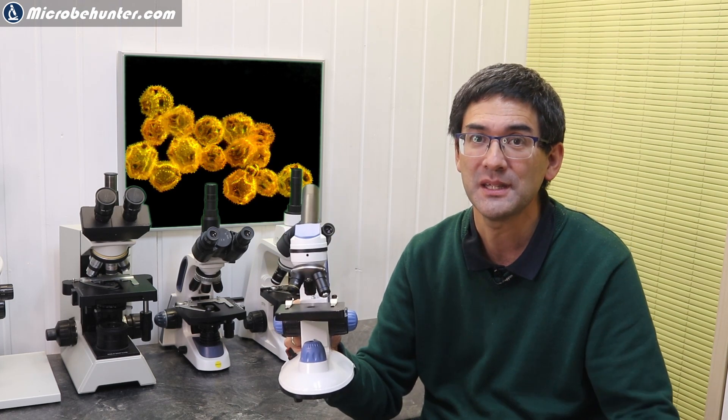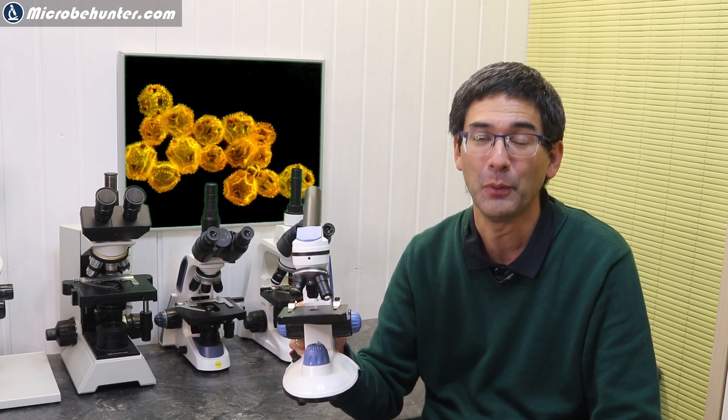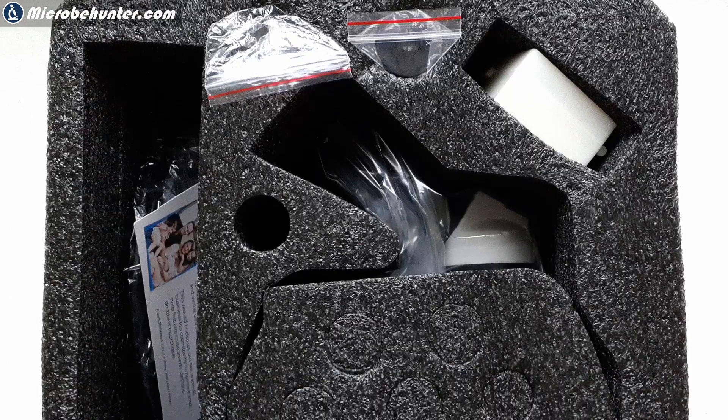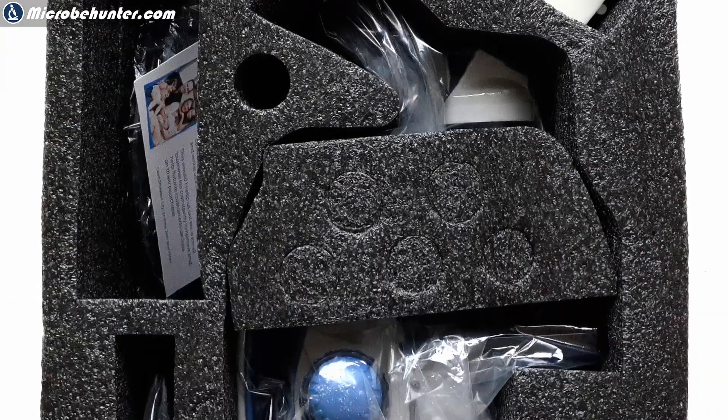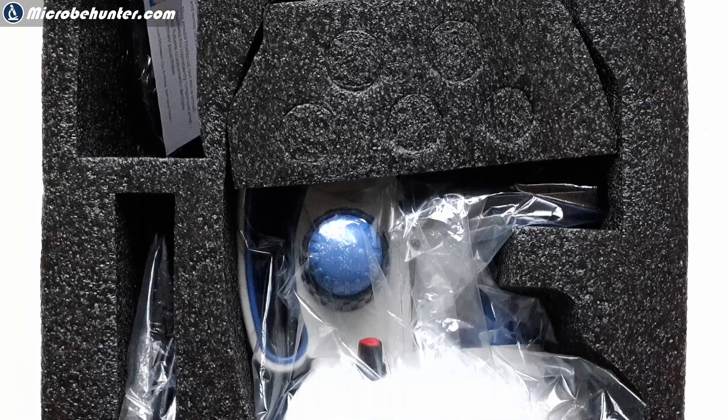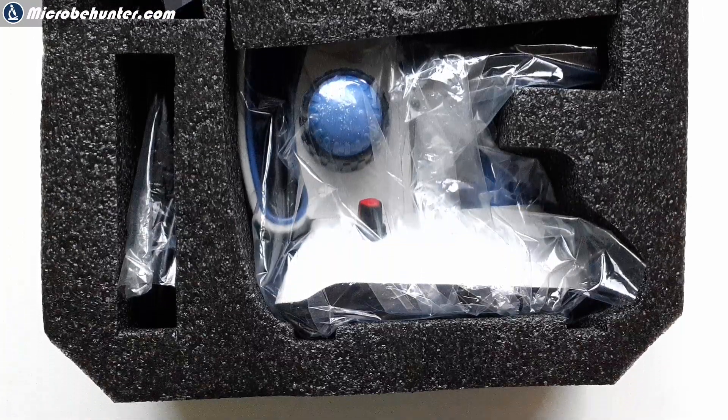So what we're going to do now is I'm going to simply start unpacking the box and we're going to have a closer look at what you get. So let's start to unpack the microscope. This is what you get in the box. It's all packaged in foam.